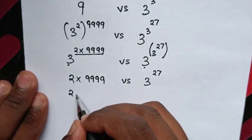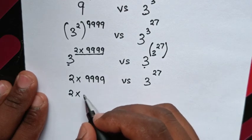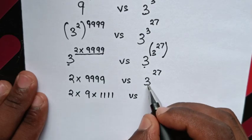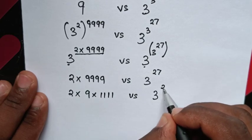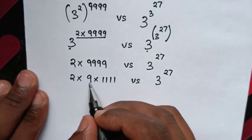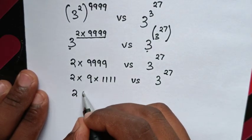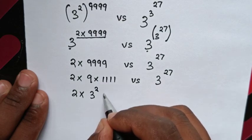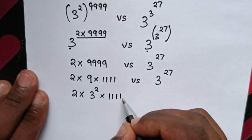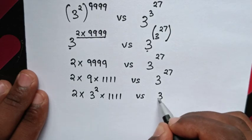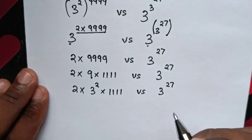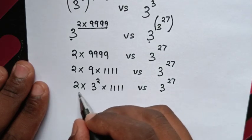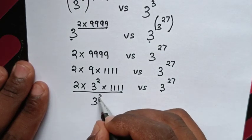It will be 2 times 9999, and 9999 is the same as 9×1111. Since 9 equals 3 squared, we can write this as 2 times 3²×1111. On the right side we have 3^27. Now from both sides we have 3 squared as a common factor.